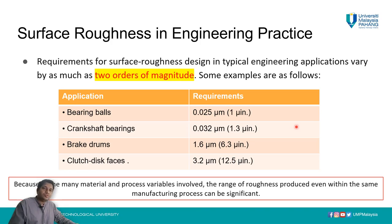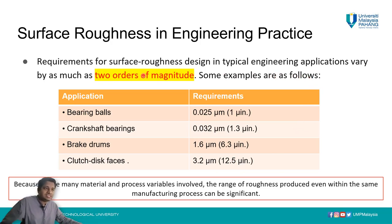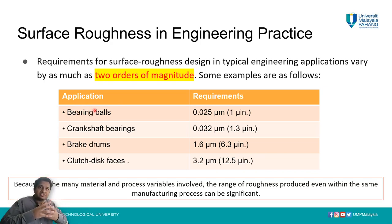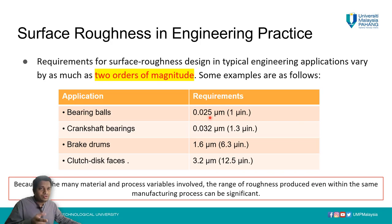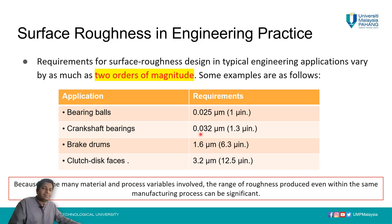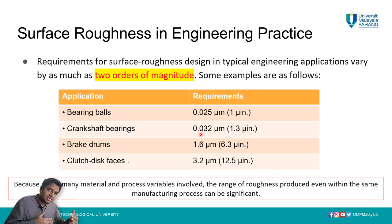Next we move into engineering practices for surface requirements. Different applications have different surface function requirements. For ball bearings, the surface must be very smooth so rollers, cages, and inner races move across each other — the surface roughness requirement is very strict at 0.025 microns, making the inner surfaces very shiny. Crankshaft bearings also require quite low roughness at 0.032 microns, while brake drums need to be on the rougher side at 1.6 microns.